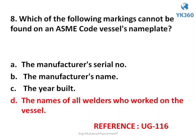Question number 8. Which of the following markings cannot be found on an ASME code vessel's nameplate? Options are: A. The manufacturer's serial number, B. The manufacturer's name, C. The year built, D. The names of all welders who worked on the vessel. Answer is option D. The names of all welders who worked on the vessel.